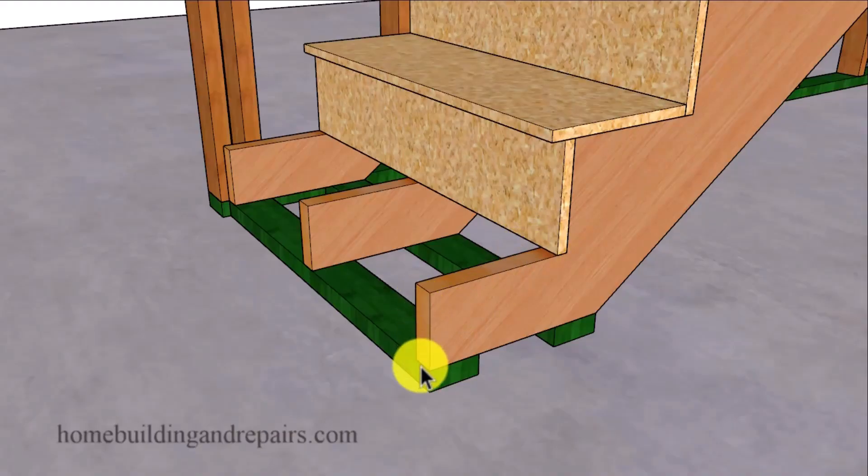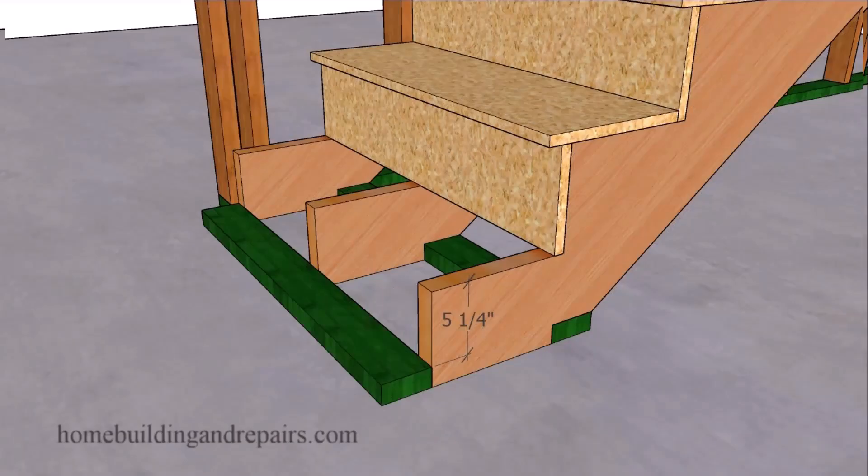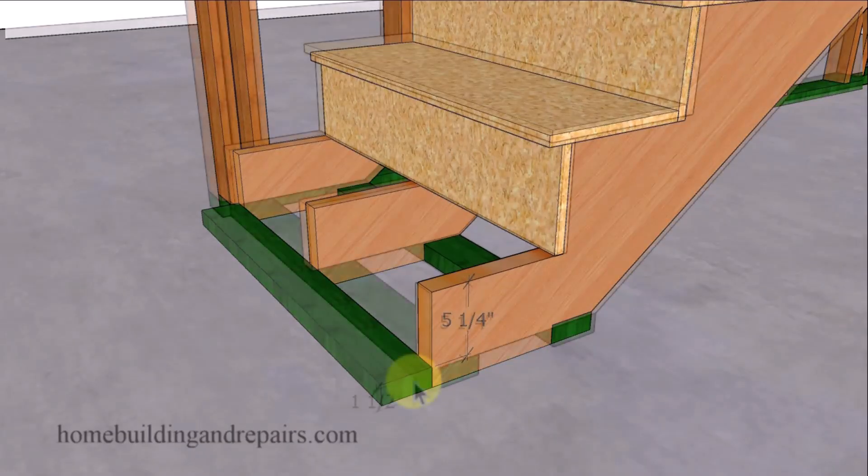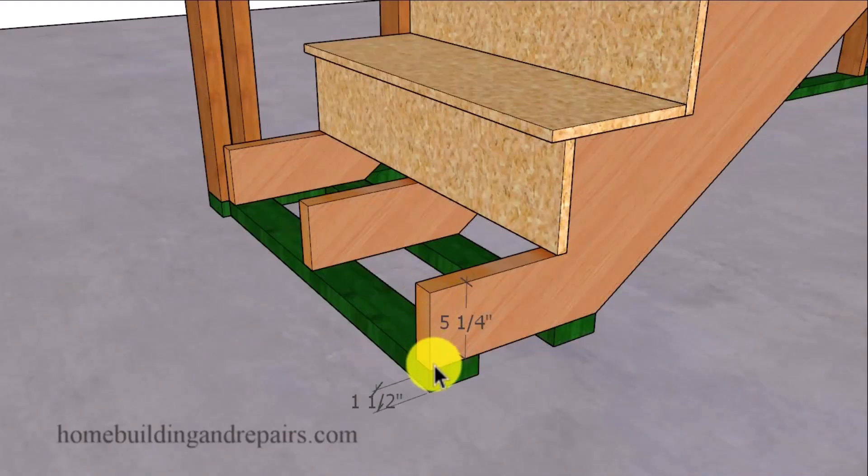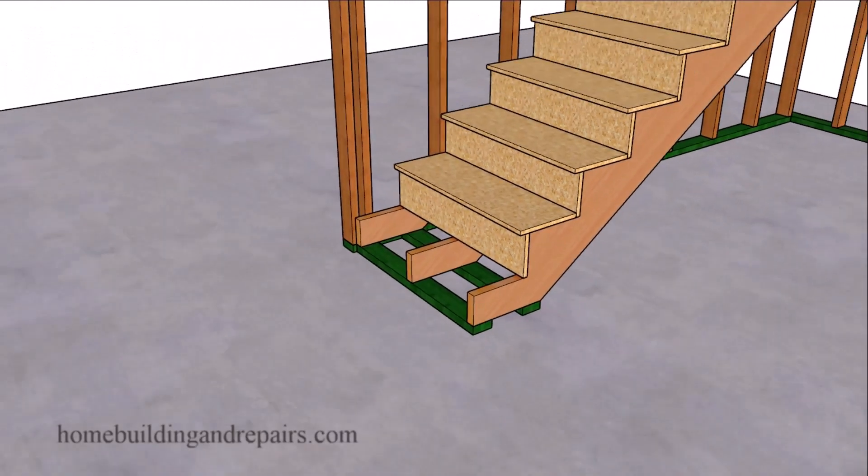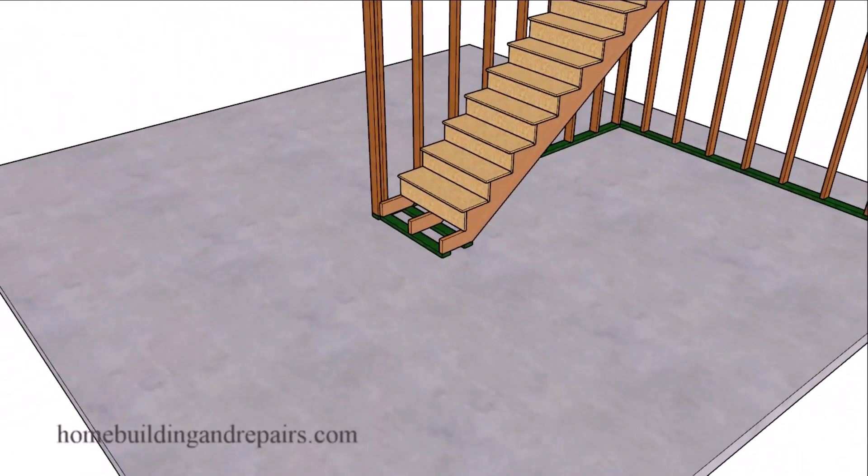First you may need to remove the existing bottom riser or tread. Place a piece of treated sill plate lumber against the stringer and measure the distance from the plate to the top of the stringer. For example, if that gap is five and a quarter inches you'll need to rip your two by six joist down to match that existing height. This ensures your final floor height is perfectly level.